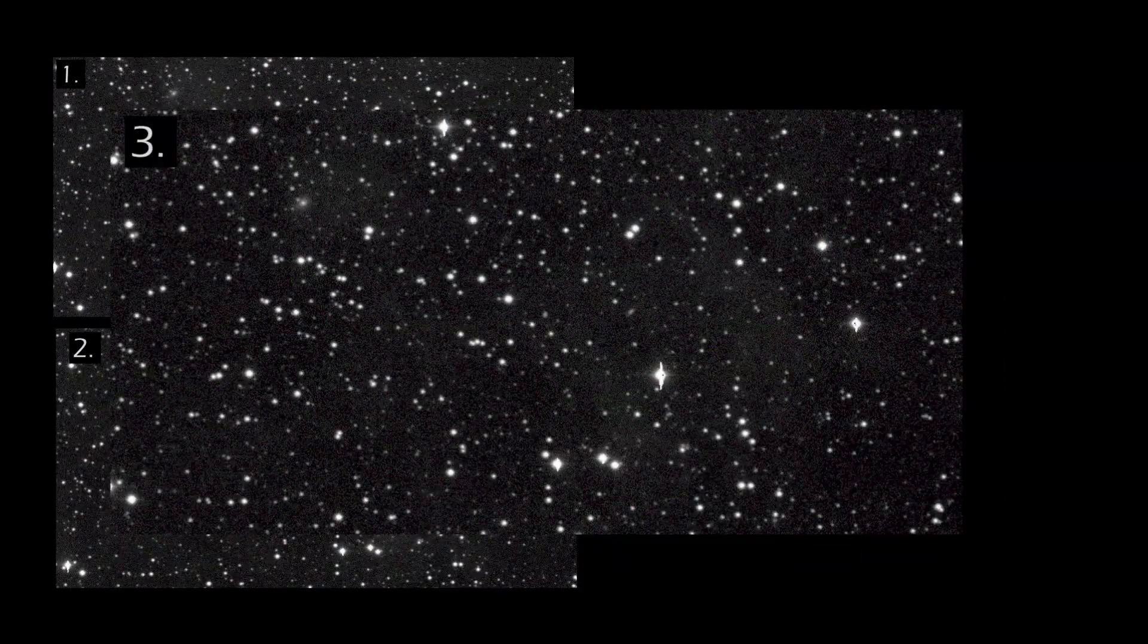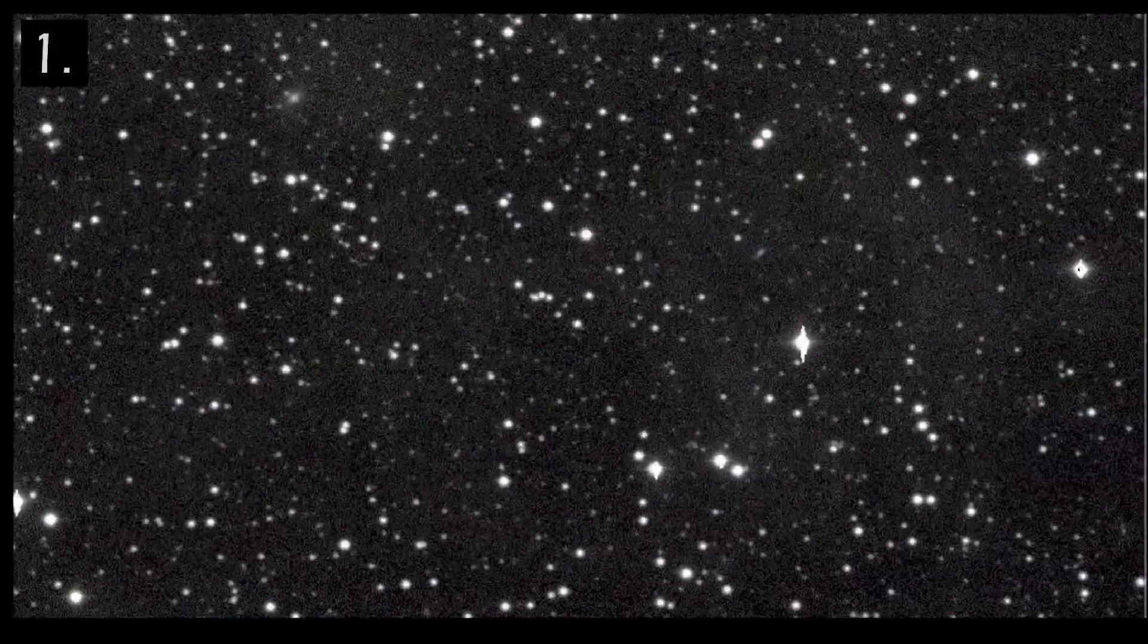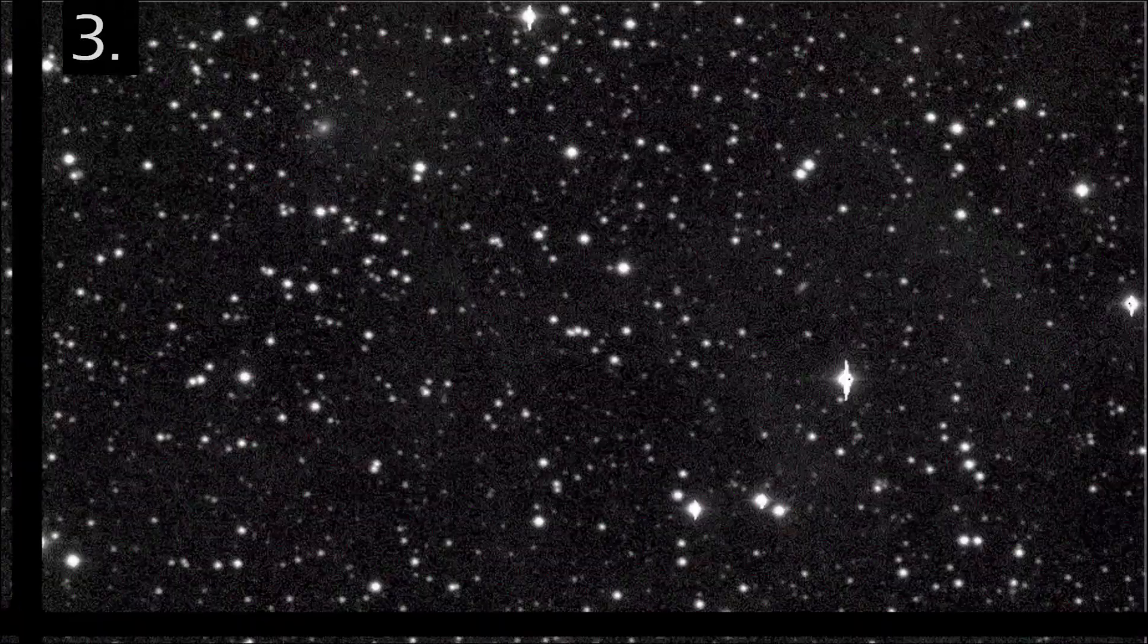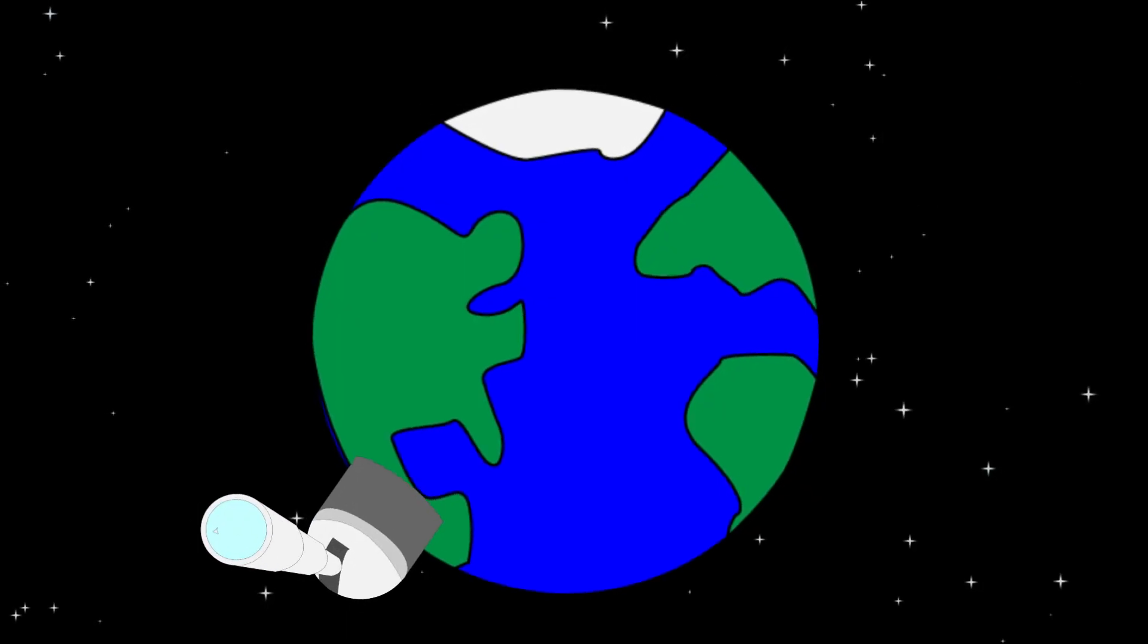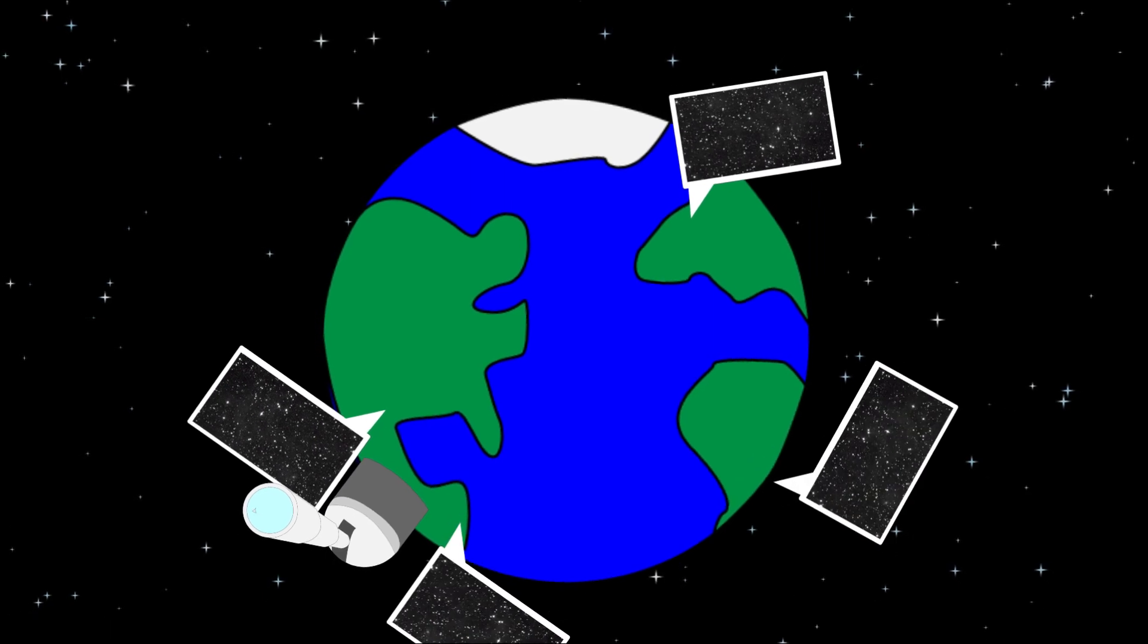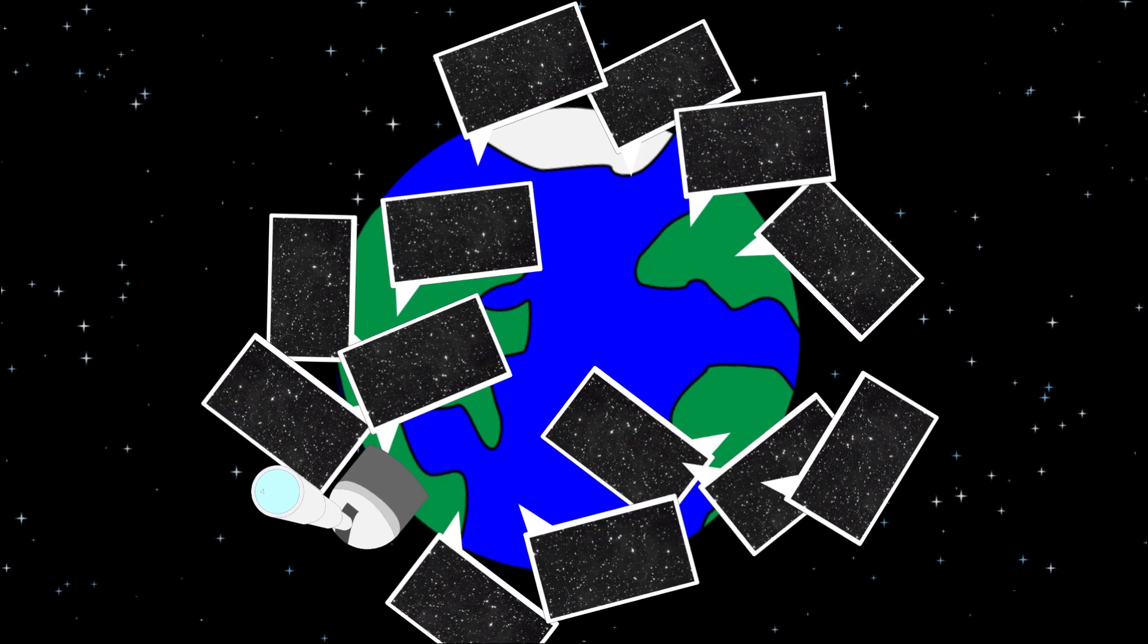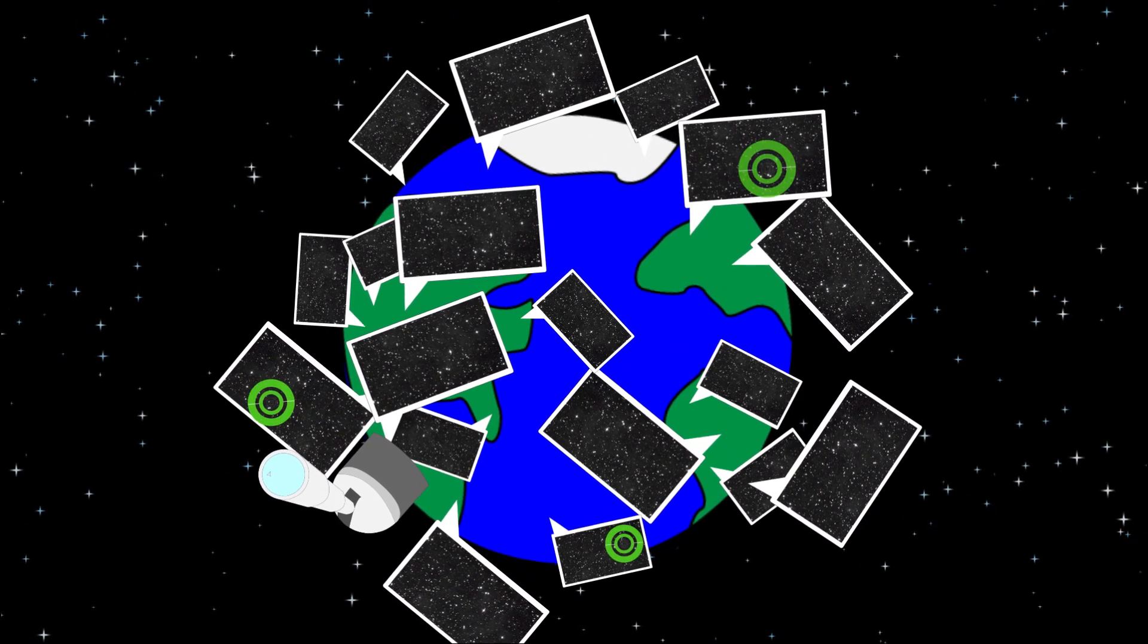They compare a series of telescope images to see if anything in the picture moved relative to the others. If it does, then it might be an asteroid. Scientists used to do this comparison by hand, but there is now so much data that they need to use computer algorithms to sift through the data to try to make these initial detections.